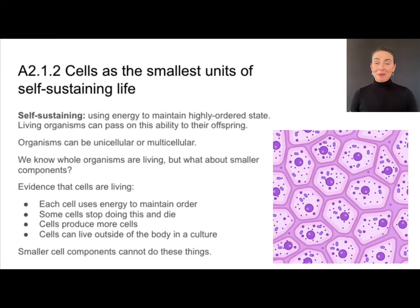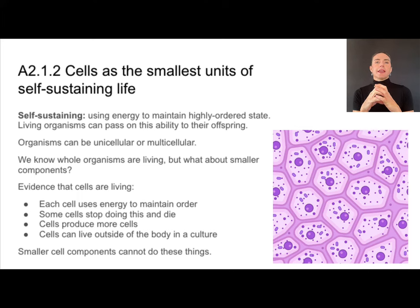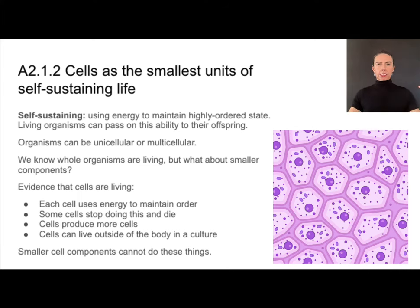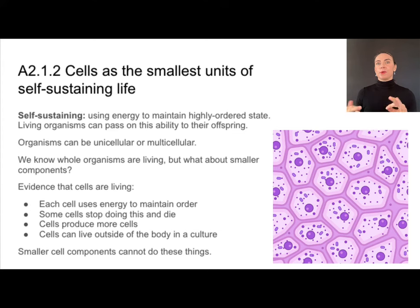If we're going to talk about the first cells, we need to have a clear understanding of what a cell is. A cell is self-sustaining, meaning it's using energy to keep this highly ordered state so that things aren't just falling apart. Living things can pass this highly ordered state onto their offspring — a very unique quality of living things.